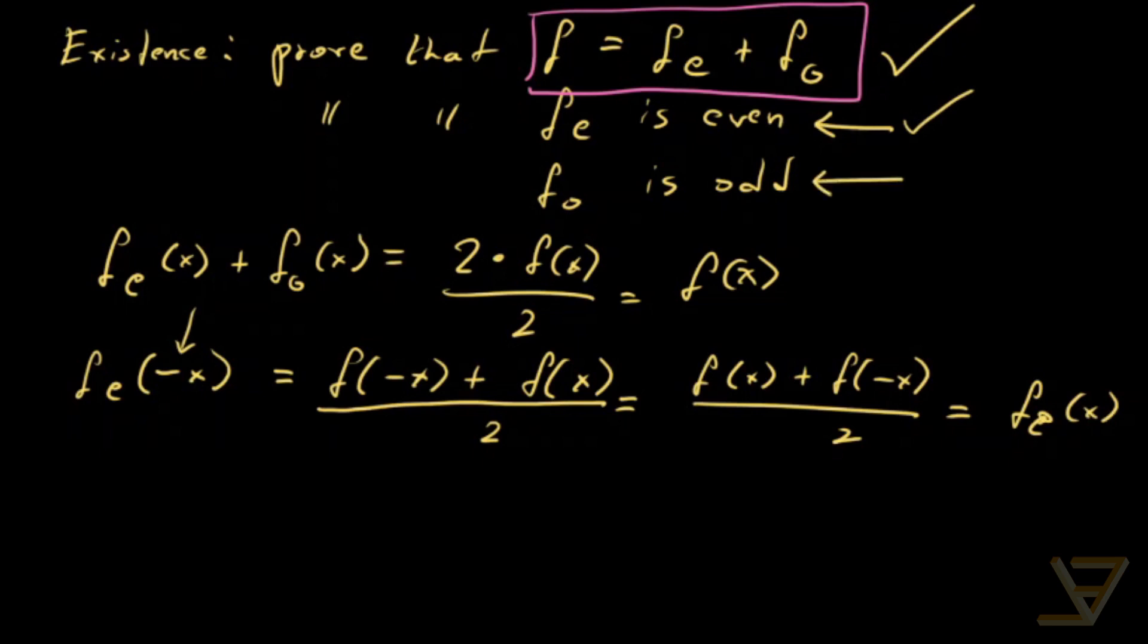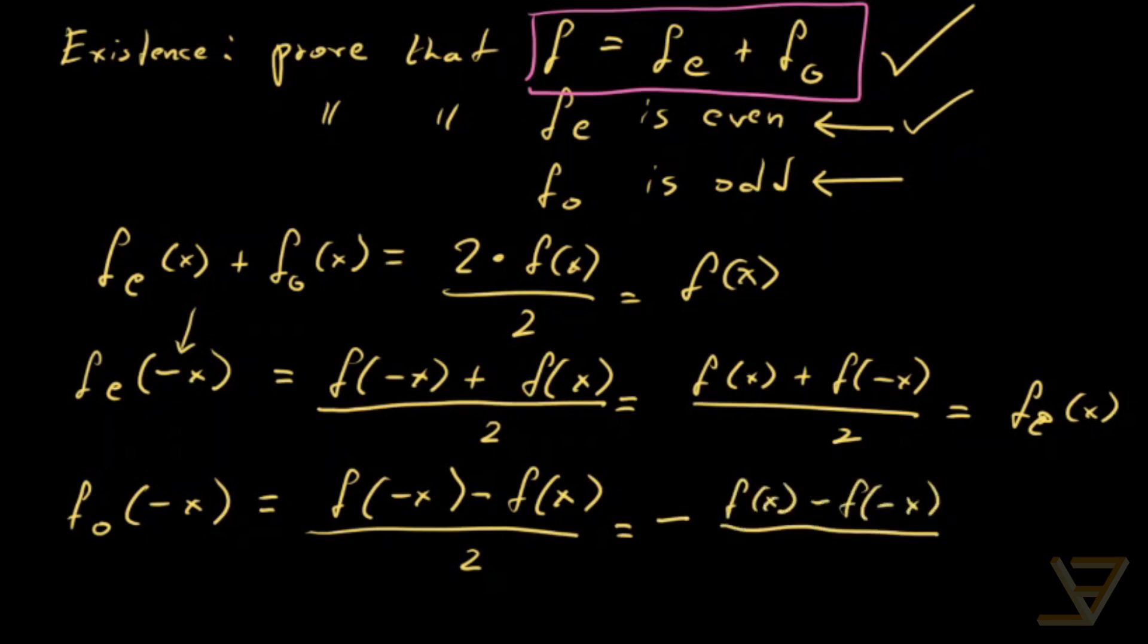And finally we're going to prove that f_o is odd. So again we'll sub in negative x and what we get is f of negative x minus f of x over two. We factor out a negative so we get negative f of x minus f of negative x over two and that's simply negative f_o of x. So that proves that f_o is in fact an odd function.